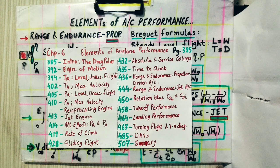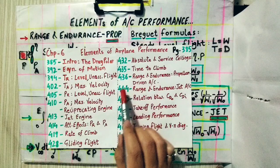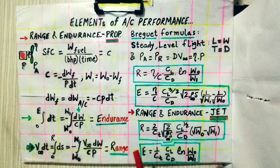Hello everyone. Now let's move on to the range and endurance of propeller-driven aircraft and jet aircraft. It is on pages 436 and 444 of Step 6, 'Element of Airplane Performance,' in the Introduction to Flight book we are referring to. This topic will be covered in two lectures.